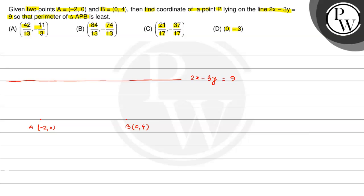One thing is clear: the length AB is constant. So the perimeter has no variation due to AB. The variable part is AP plus PB. To minimize the perimeter, we need to minimize AP plus PB, which depends on where P is placed on the line.